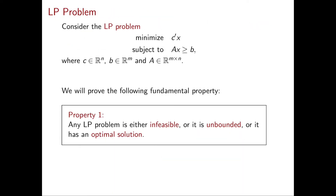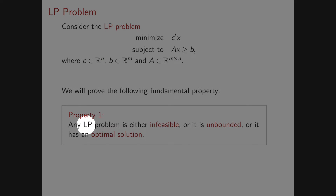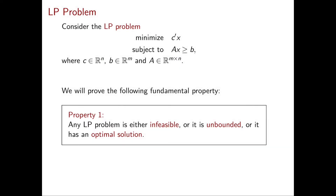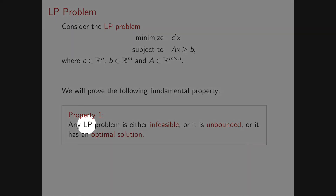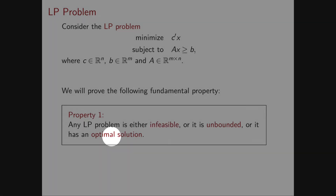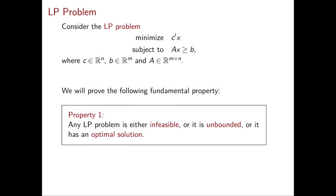In this course we will see that a linear programming problem can only have those three specific outcomes. We will prove that any linear programming problem is either infeasible, or unbounded, or it has an optimal solution — nothing else can happen.